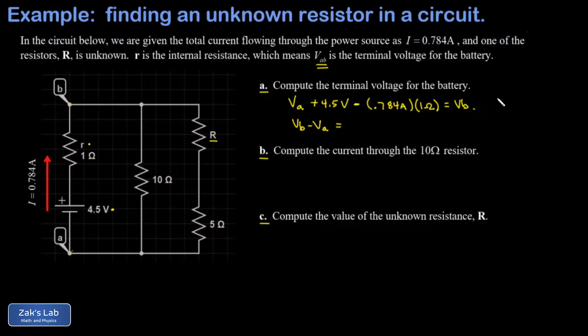So I subtract VA from both sides and then simplify this expression 4.5 minus 0.784 times 1. When I run the numbers on this, I get a terminal voltage of 3.716 volts.